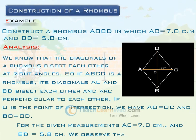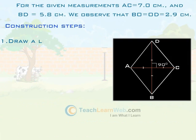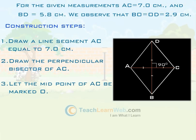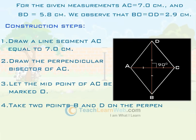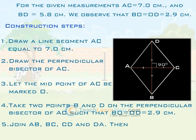We observe that BO equals OD equals 2.9 cm. Construction steps: Draw a line segment AC equals 7 cm. Draw the perpendicular bisector of AC and let the midpoint of AC be marked O. Take two points B and D on the perpendicular bisector of AC such that BO equals OD equals 2.9 cm. Join AB, BC, CD, DA. Then ABCD is the required rhombus.